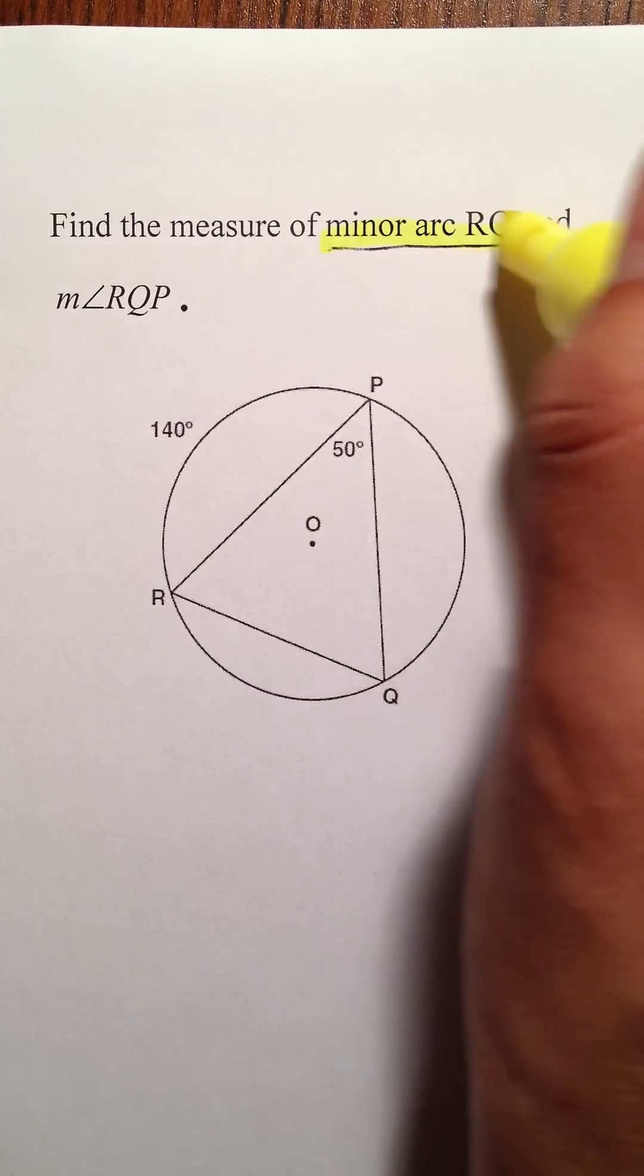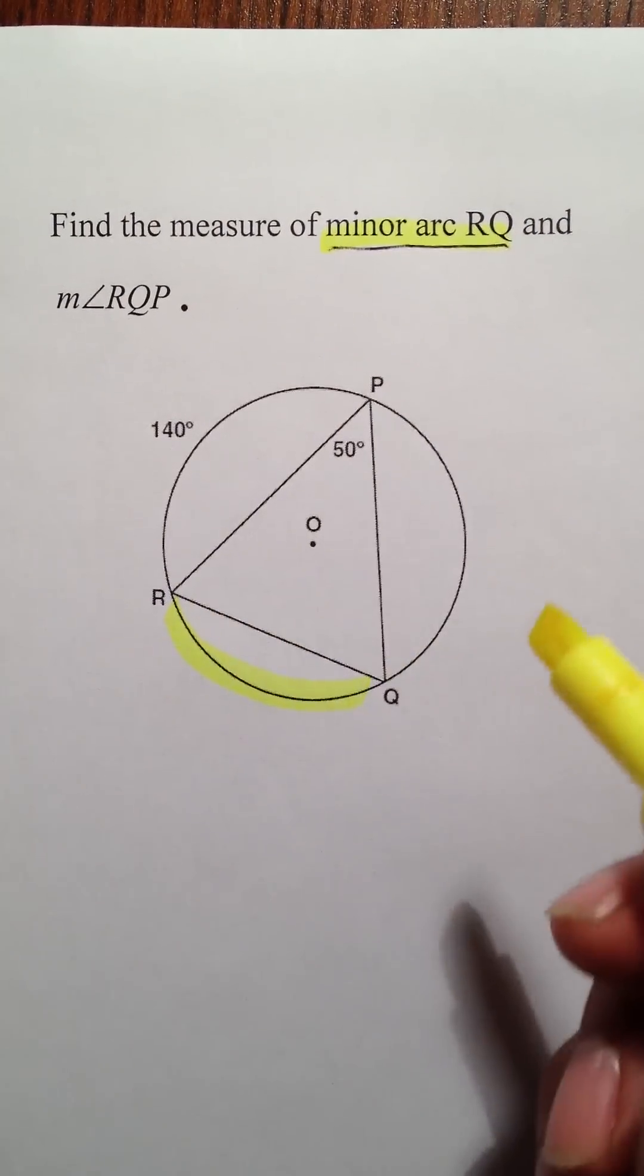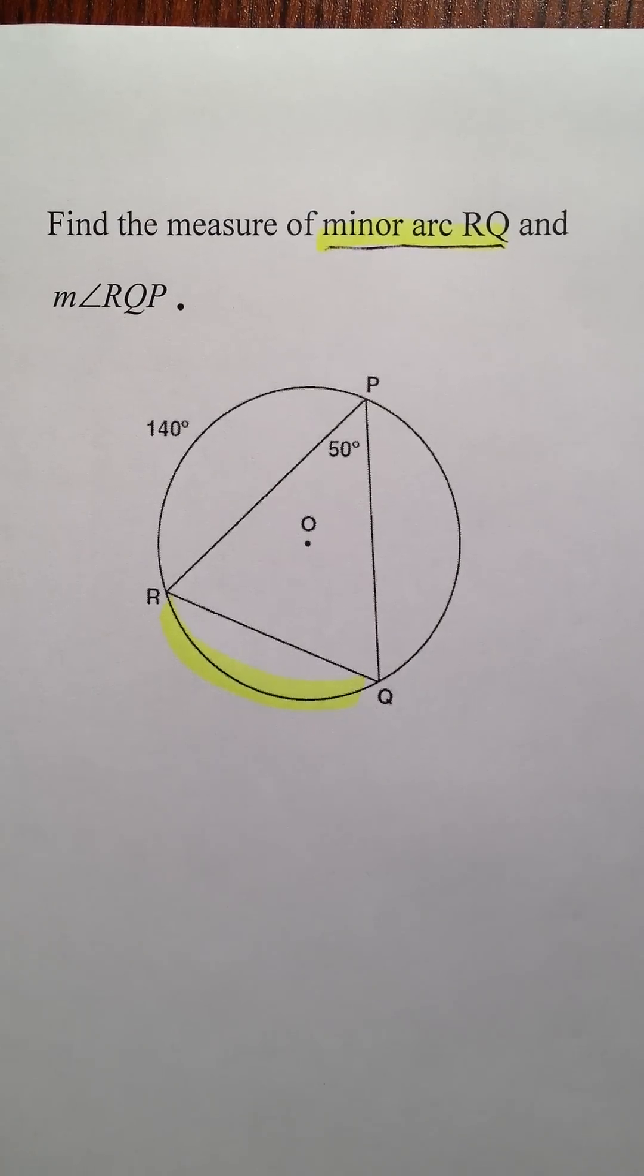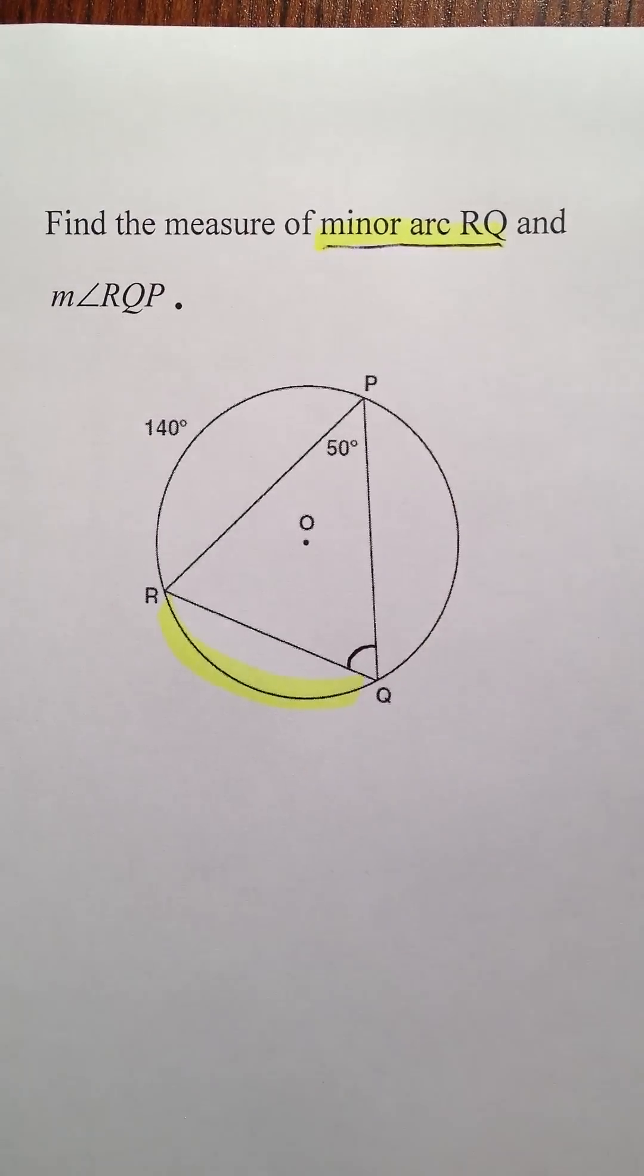we're going to find the minor arc RQ, which is right here, so we're going to find what degrees that is. I'm also going to be finding the angle RQP in this problem, which is right here.